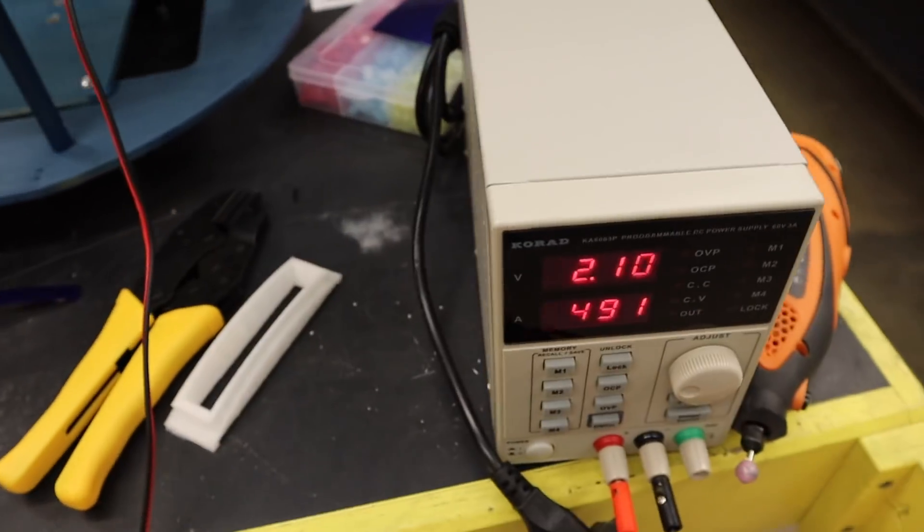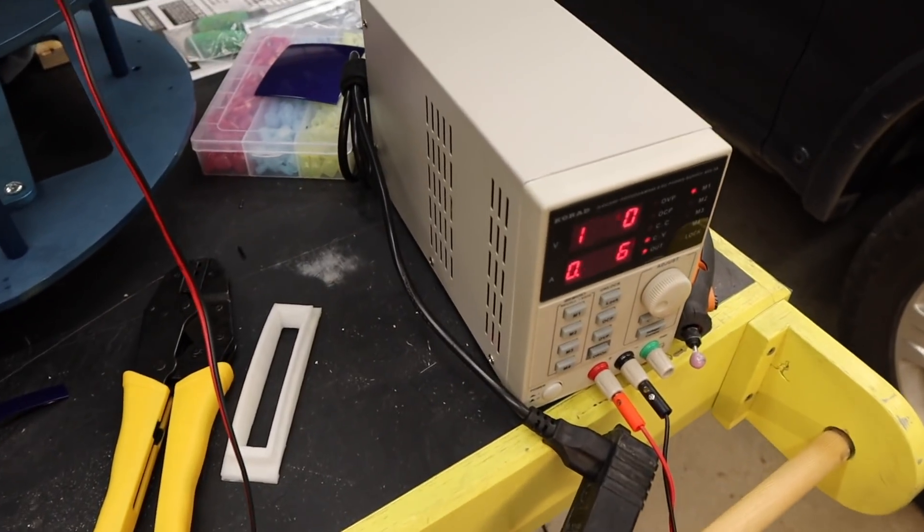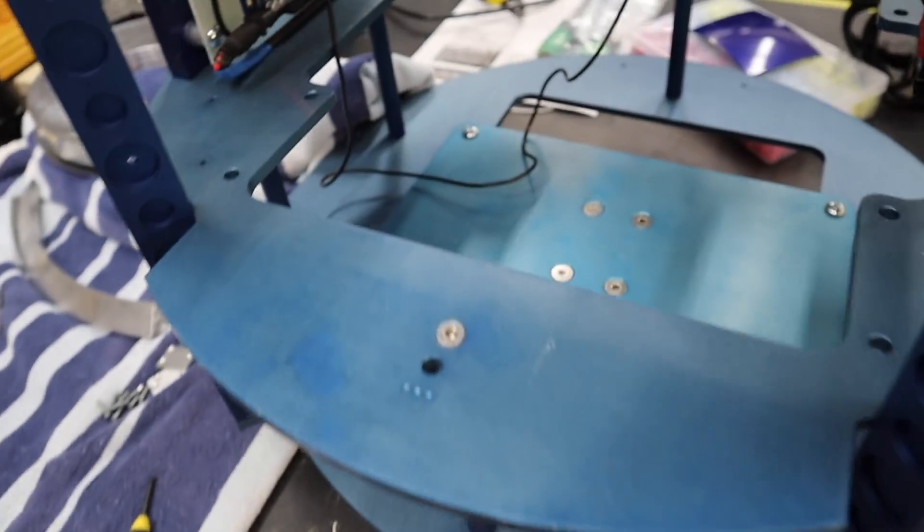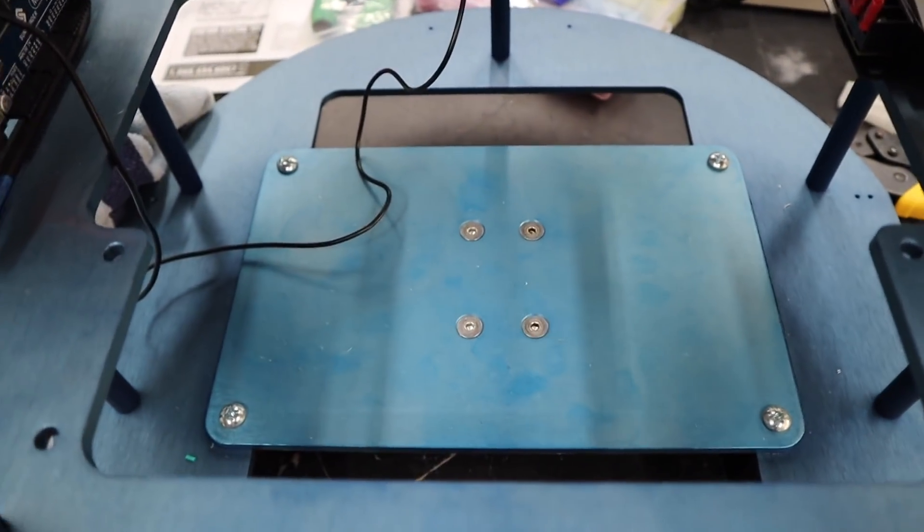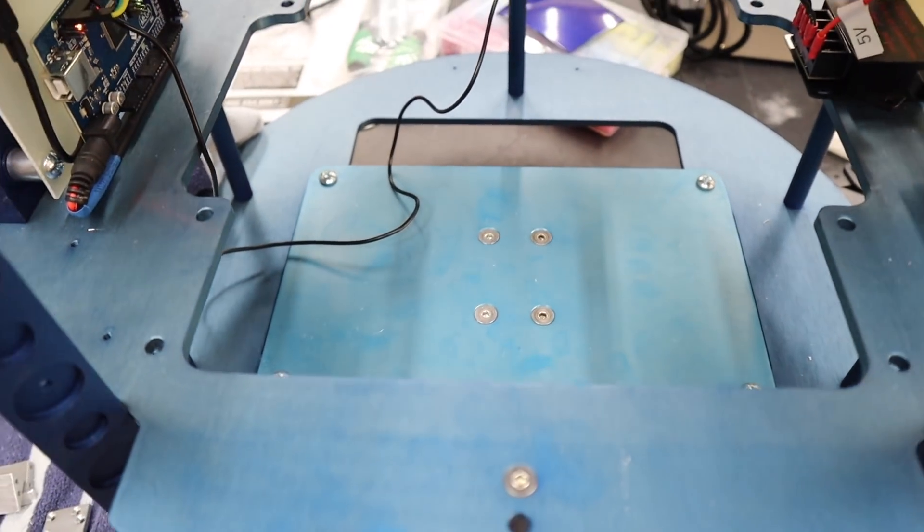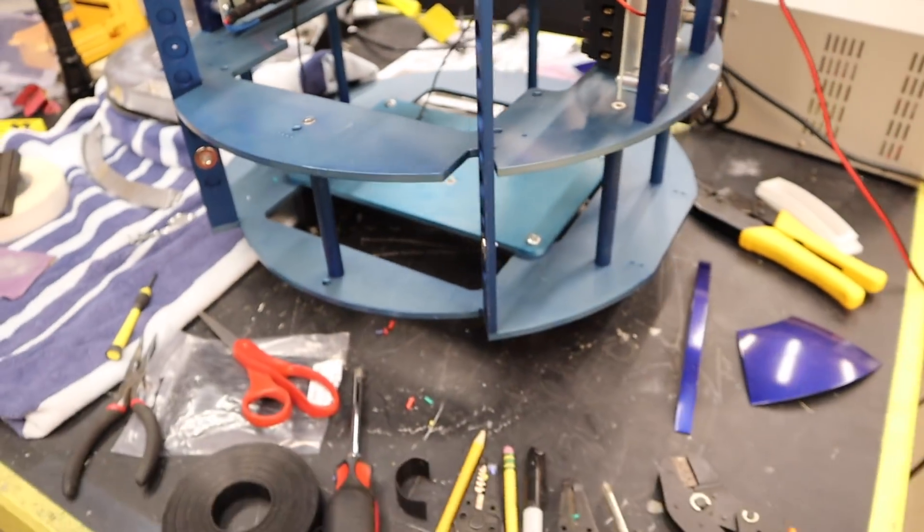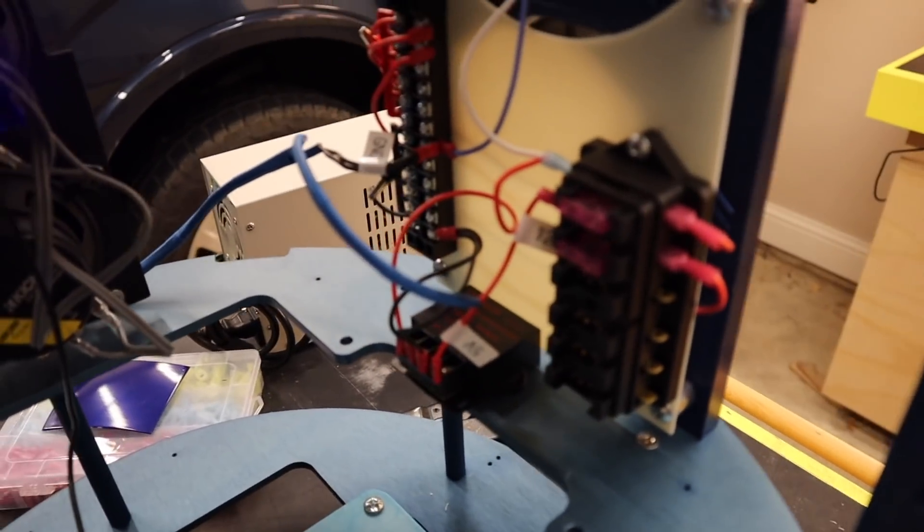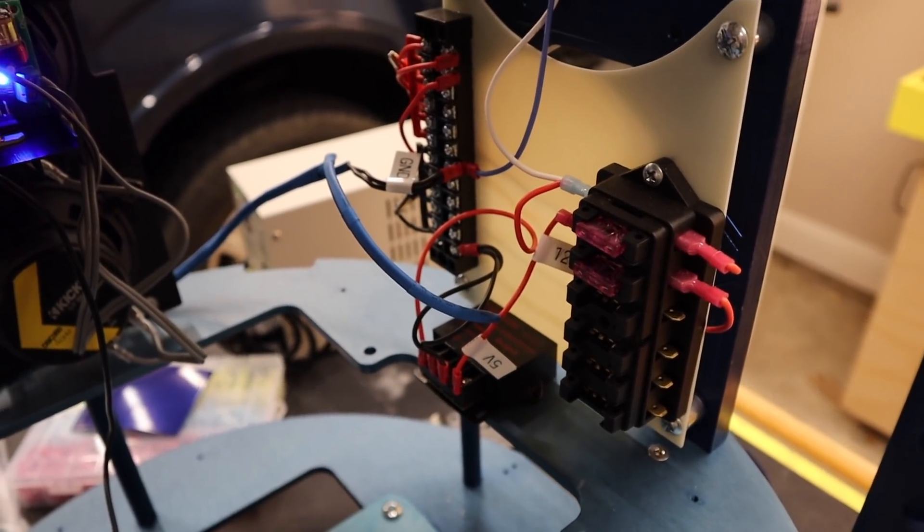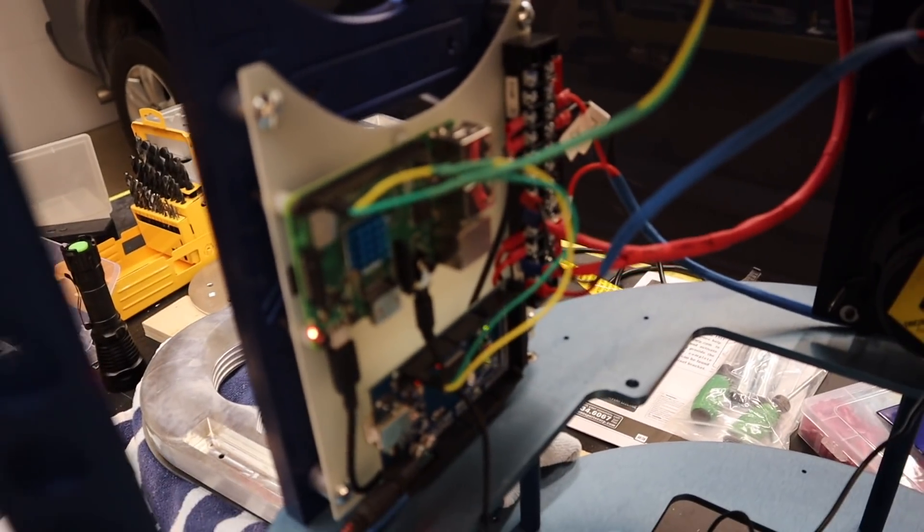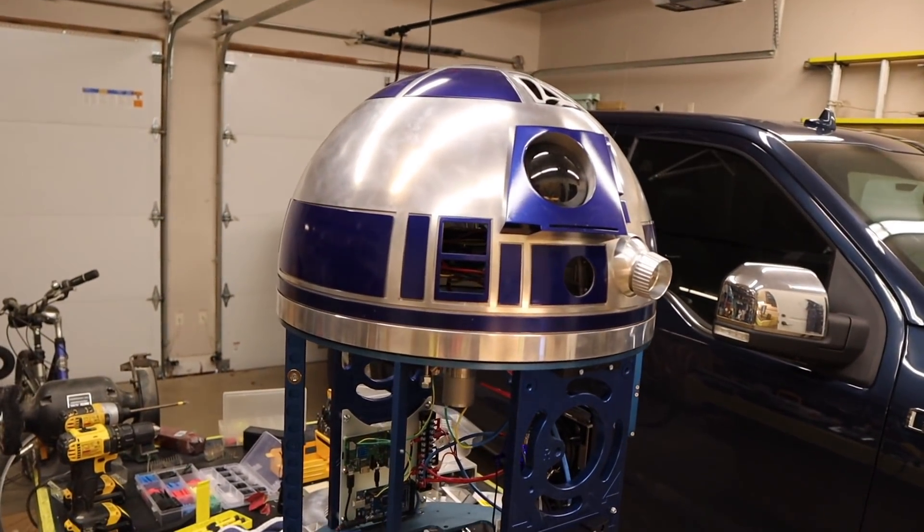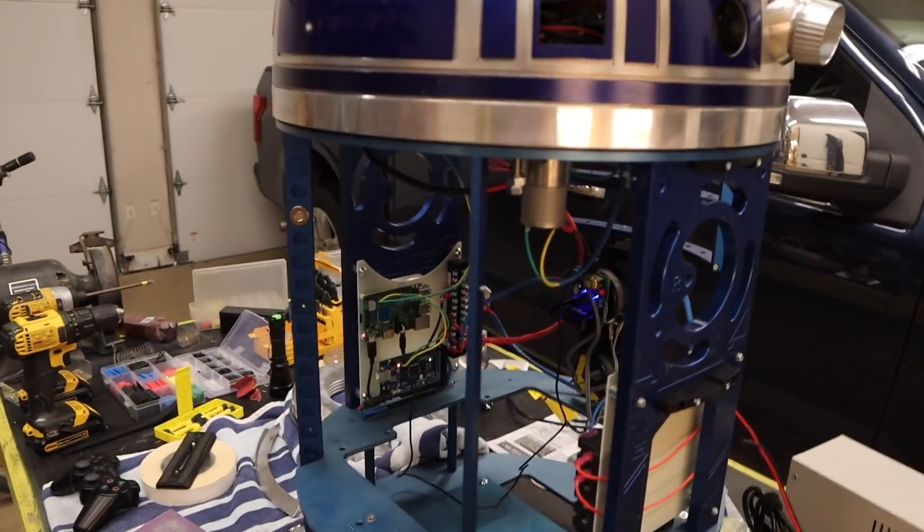And so right now everything is just running off of a bench top power supply. And so eventually there will be some kind of lithium ion or lithium polymer or something battery pack in the bottom of this. And so that's just temporary. I have built some very simple, rudimentary power rails and stuff. But I got a long way to go on a lot of that because I'm not really satisfied with it. And so anyway, that is an update on R2D2. I'll see you in the next video.